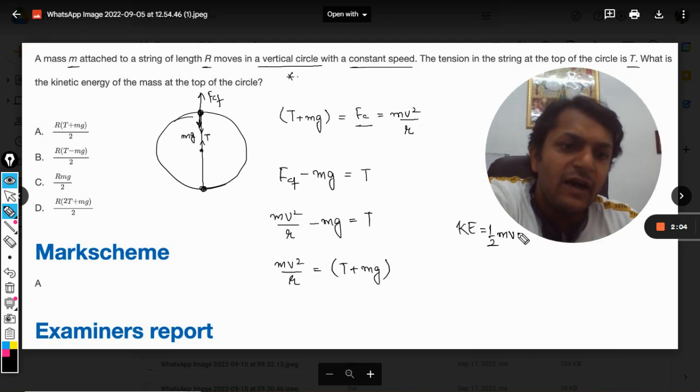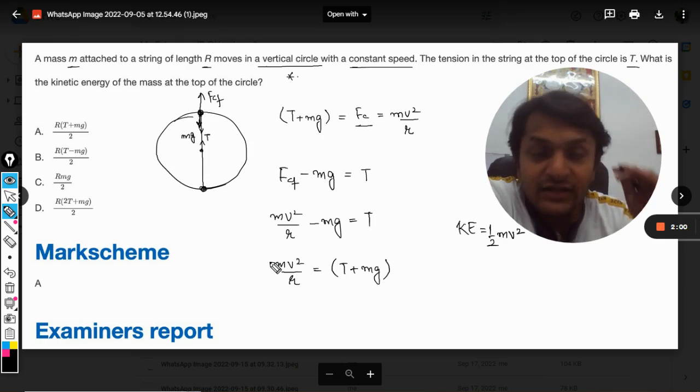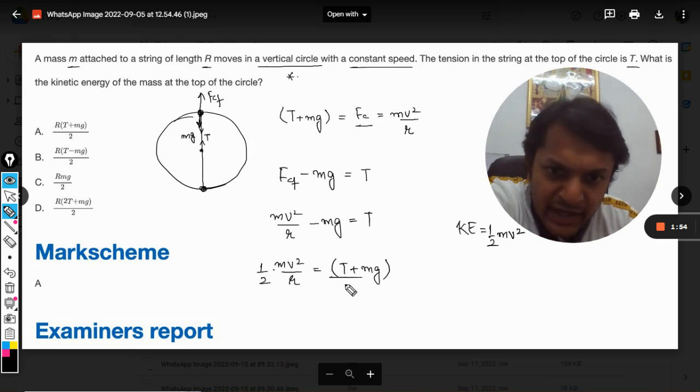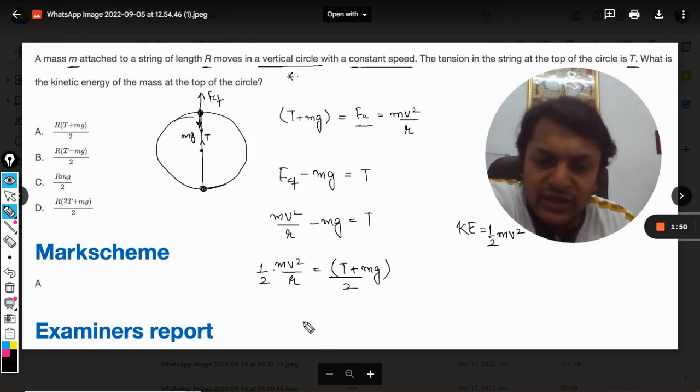which will be given by half mv². So yes, mv² is here, so I need to divide the complete equation by two. So first of all I'm multiplying this by half and dividing this by two, and I take this R to the other side by cross multiplication. So this thing became: kinetic energy